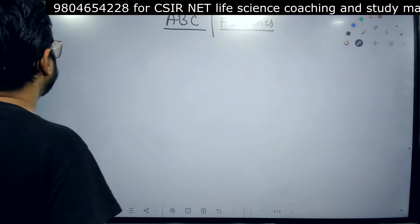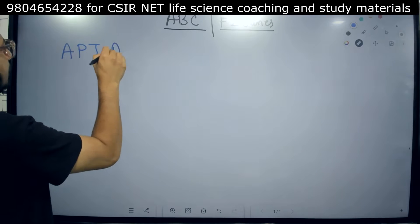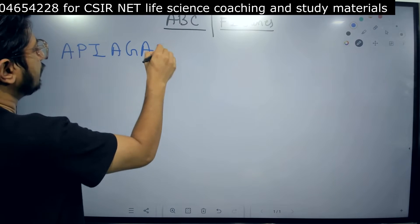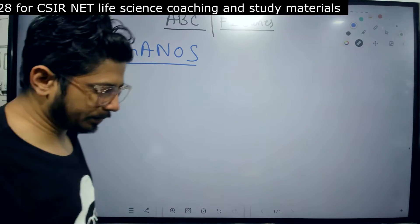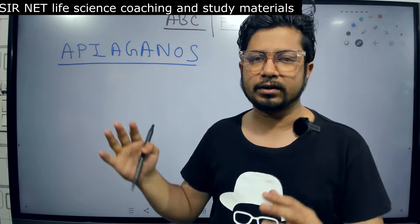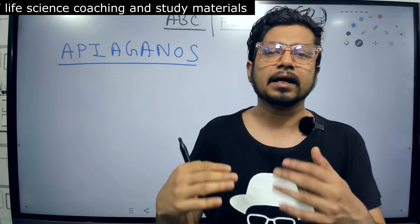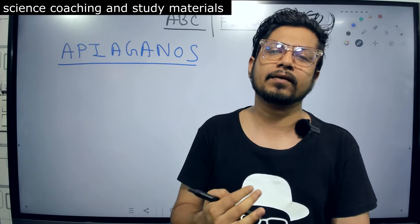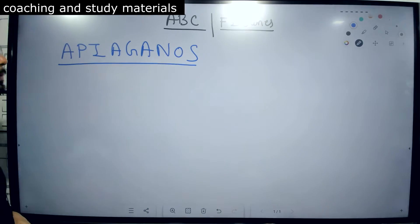Let me take a color and write down APIAGANOS. This is something that you need to remember. Although this word doesn't have any meaning, it has many information hidden here that will help you to understand the floral meristem identity genes.